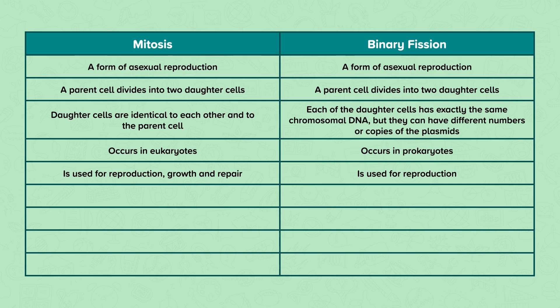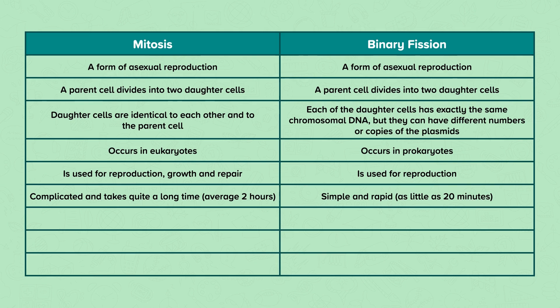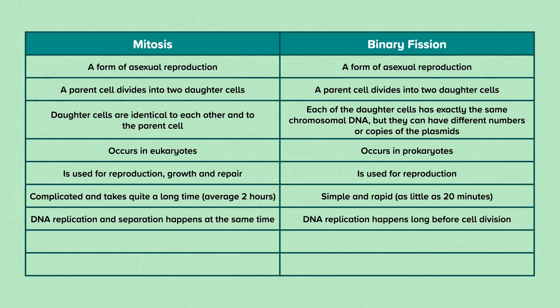Mitosis is complicated and takes quite a long time — on average two hours. In contrast, binary fission is simple and rapid, taking as little as 20 minutes. For mitosis, DNA replication and separation happen at the same time. However, with binary fission, DNA replication happens long before cell division.